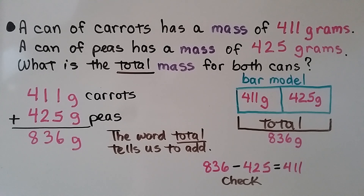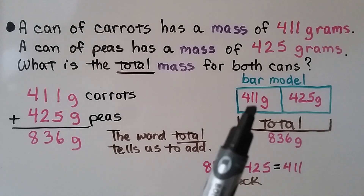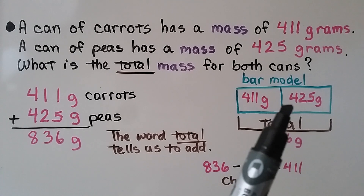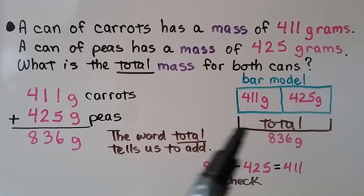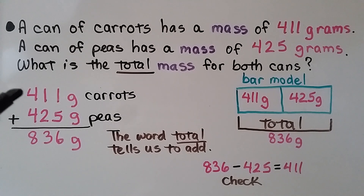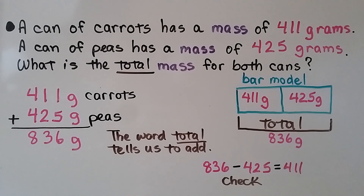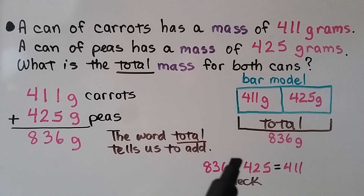A can of carrots has a mass of 411 grams. A can of peas has a mass of 425 grams. What is the total mass for both cans? Using a bar model, we put 411 grams on one side and 425 grams on the other. The word 'total' tells us to add: 411 grams plus 425 grams equals 836 grams. We can check by taking 836 minus 425 equals 411 — the minuend — so our math is correct.